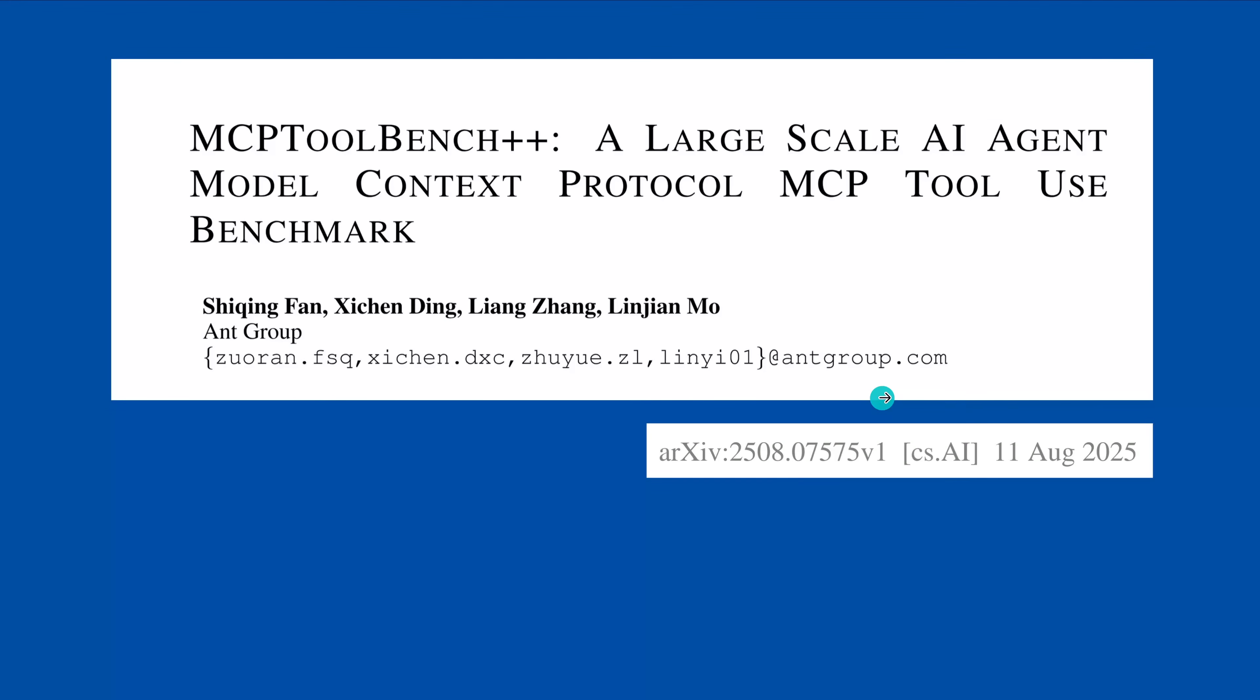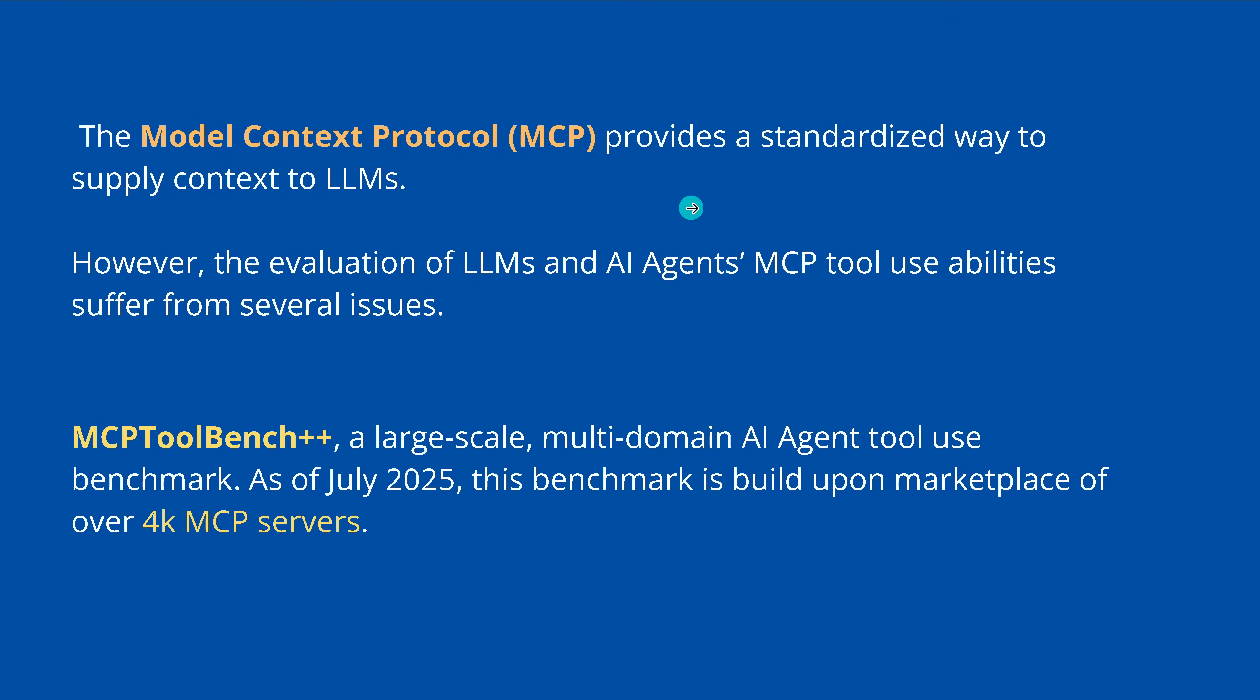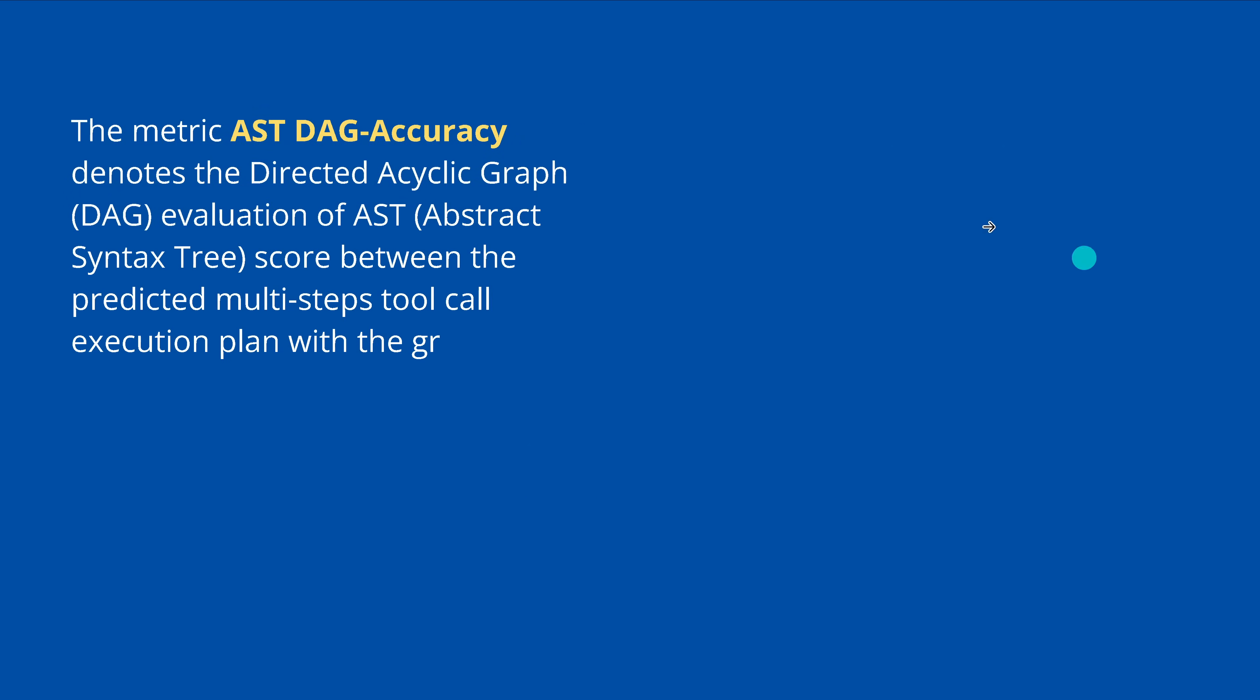So here we have brand new August 11, 2025, a new MCP tool benchmark plus plus. A large-scale AI agent model context protocol MCP tool use benchmark by the ONT group. And they say, as of July 2025, more than 4,000 MCP servers. So now we have a statistically relevant set, we can run benchmarks and see how good are LLMs if we integrate them with MCP tool calls. And they have two parameters. At first, we have a directed acyclic graph evaluation of the abstract syntax tree. We call this simply the AST DAG accuracy.